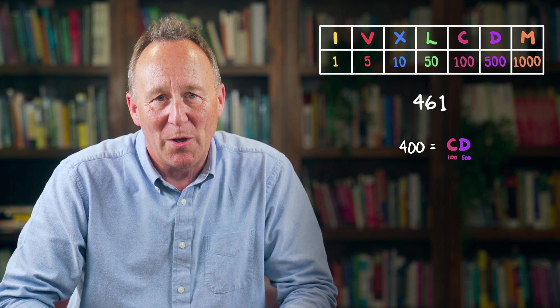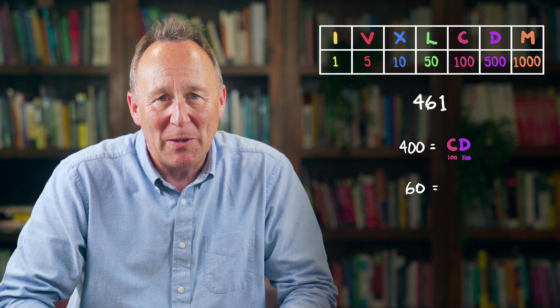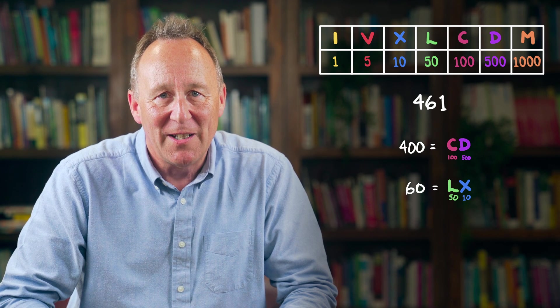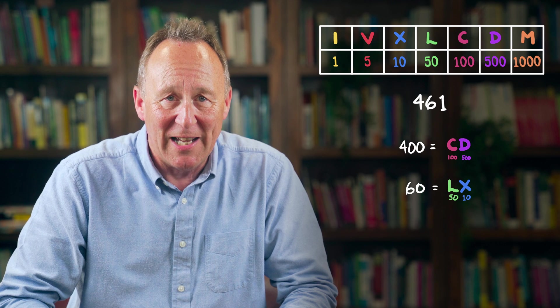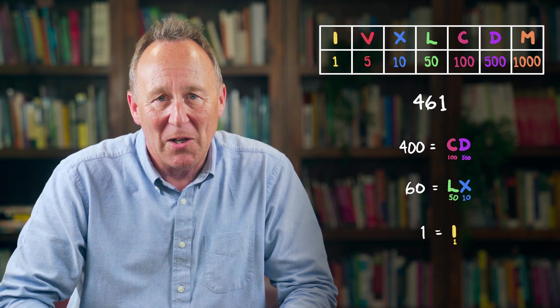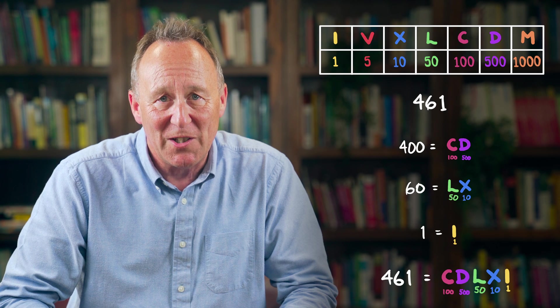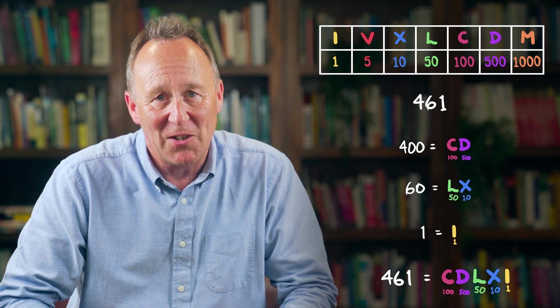Back to the problem. As we said, the 400 part of 461 is CD. Now let's look at the 60 part. Well, we know that L is 50 and X is 10, so the 60 part can be written as LX. And finally, the 1 is simply I, so the full representation of the number 461 is CDLXI.